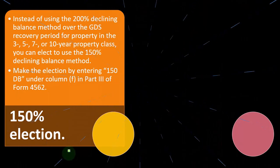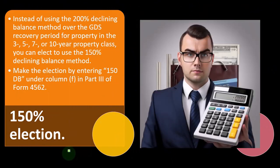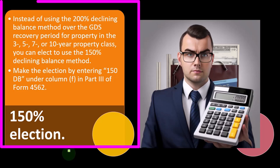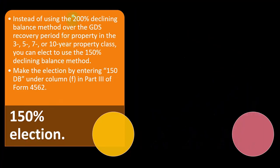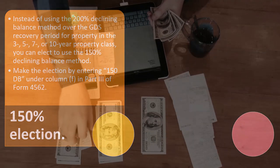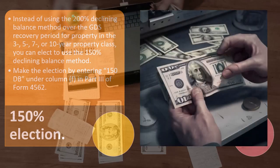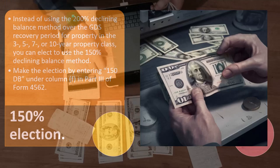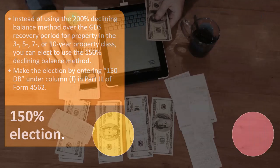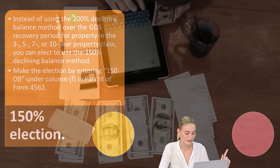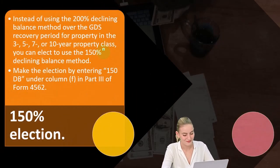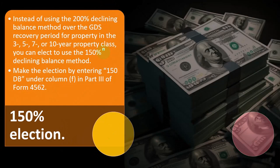The 150% election: instead of using the 200% declining balance method over the GDS recovery period for property in the three, five, seven, or 10-year property classes, you can elect to use the 150% declining balance method. The 200% would often give the biggest upfront benefit, but you might not want that if you only want to deduct up to a certain point and push the remaining benefit into future periods — perhaps because you expect to drop into a lower tax bracket. So you don't have to go all the way to straight-line; the 150% is the middle option.